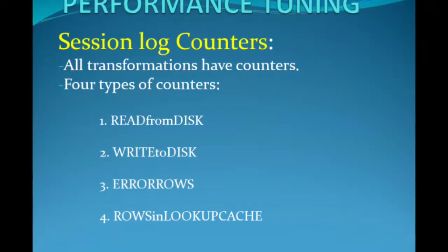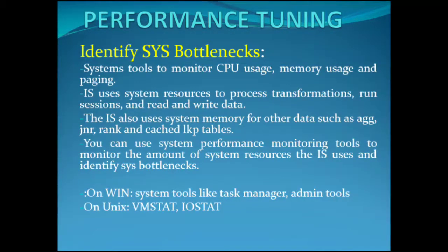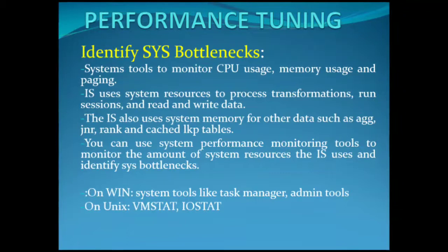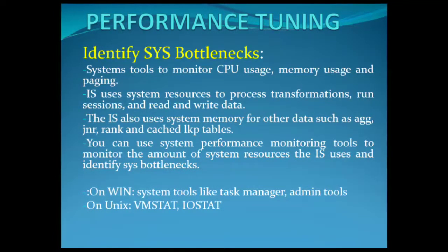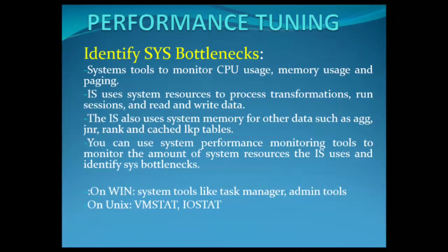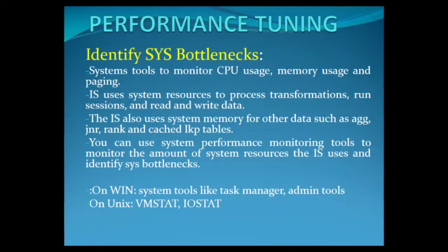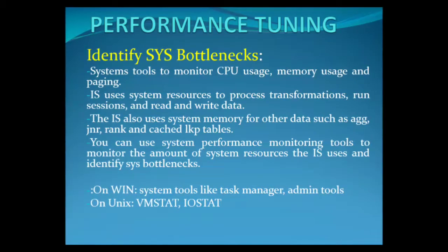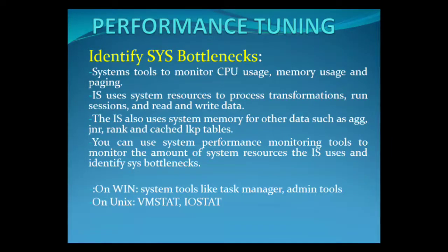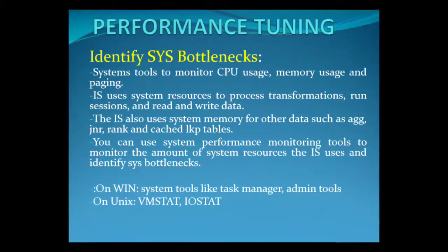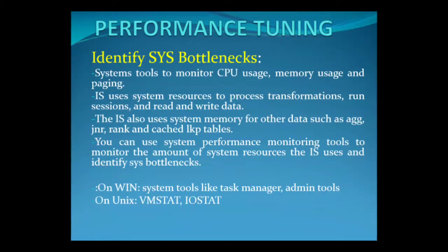Finally, identify system bottlenecks. After tuning everything else, consider tuning the system. Use system tools to monitor CPU usage, memory usage, and paging. The Integration Service uses system resources to process transformations, run sessions, and read and write data — including system memory for Aggregator, Joiner, Rank, and cached lookup tables. On Windows, use the Task Manager or other administrative tools. On Unix, use tools such as vmstat and iostat. Monitor CPU usage, I/O waits, and paging to identify system bottlenecks.